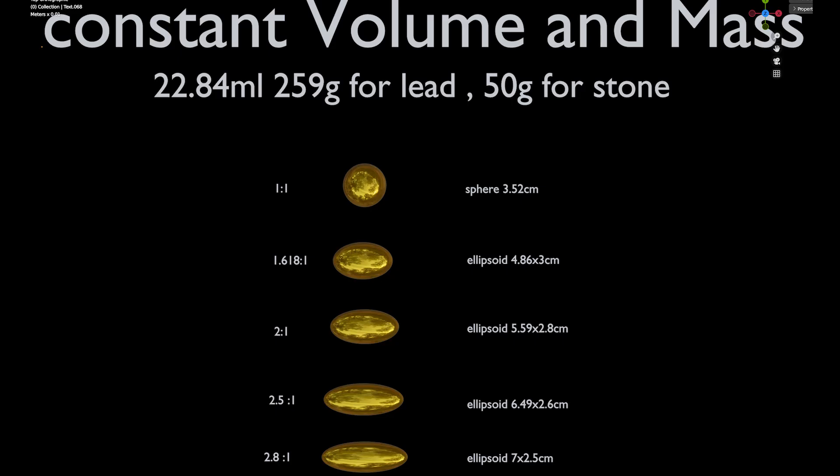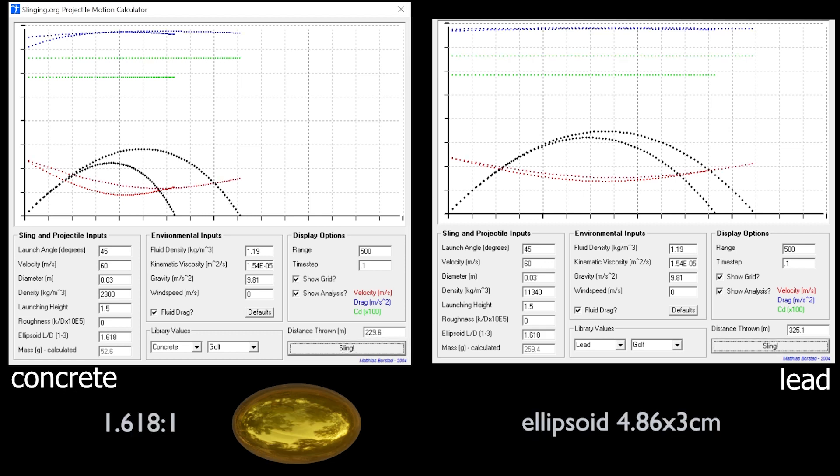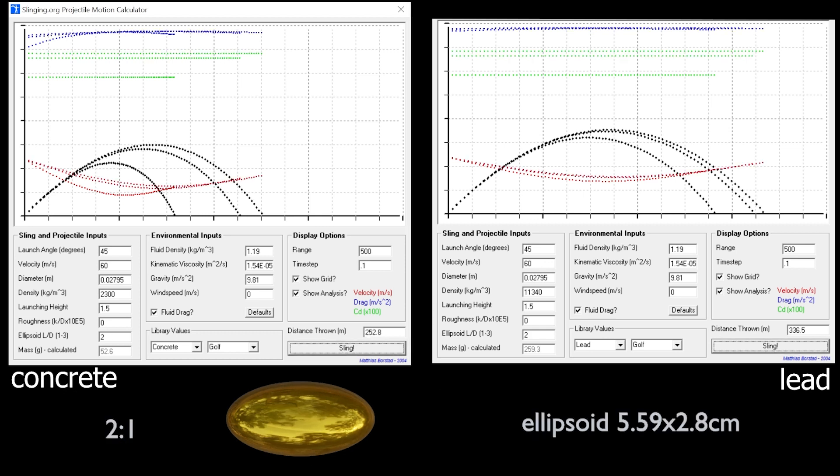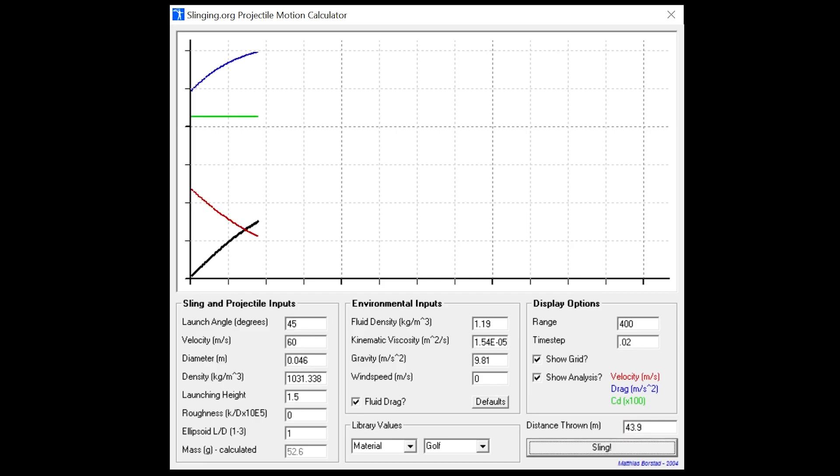Then we can see the difference in range of different ratios while keeping mass the same. What changes is ratio, length, and diameter, and mass remains the same. We can also see the effect of different roughness.